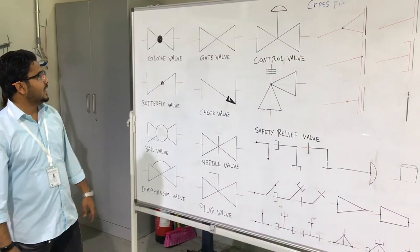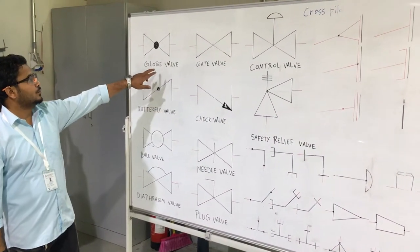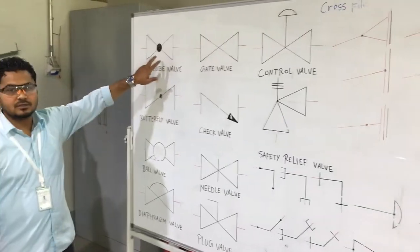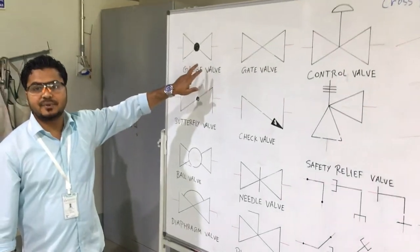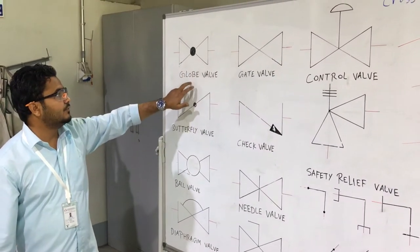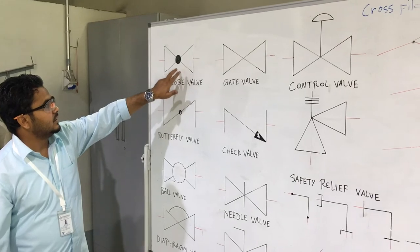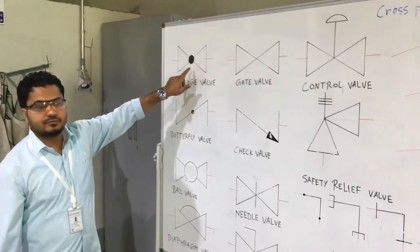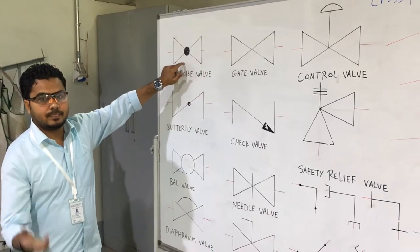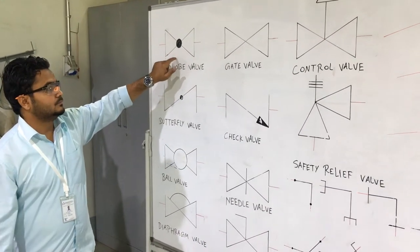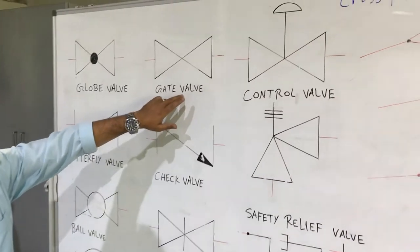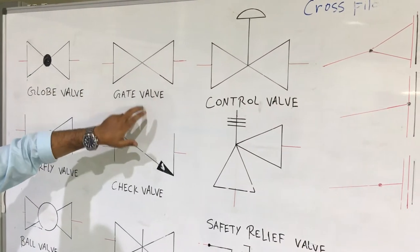First we have here the globe valve. This is the symbol used in isometric drawing — this is a globe valve, and the symbol of globe valve is like this. Next, this is a gate valve; this is the symbol of gate valve.